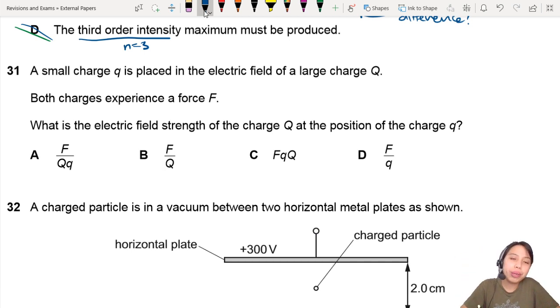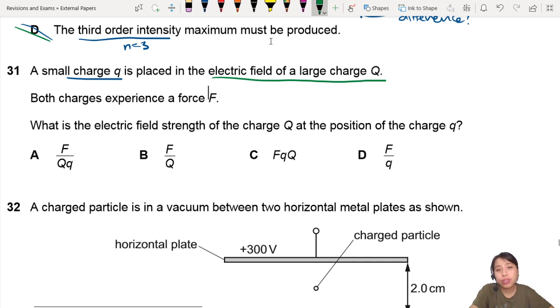That means a lot of people got it wrong, and so Cambridge is like, let's ask it again. Okay, a small charge q is placed in the electric field of a large charge Q, big Q. Both charges experience a force F. I mean, they are attracting each other or they are repelling each other, I don't know. What is the electric field strength of charge Q at the position of charge q? Wow, many Qs. Let's draw it out, shall we?